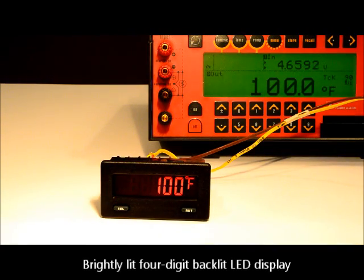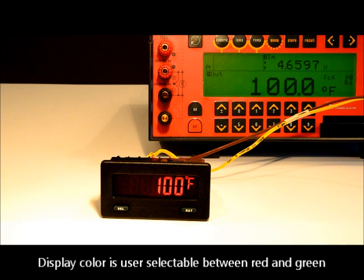Moving to the front of the meter, we see a brightly lit four-digit backlit LED display. The readings are clear, even at a distance. The display color is user-selectable between red and green.